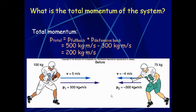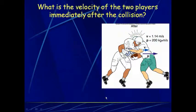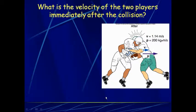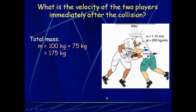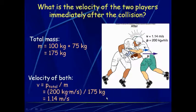The next question asks for the velocity of the two players immediately after the collision. Since they move as one, you use the equation M1·V1 initial plus M2·V2 initial equals (M1 plus M2) times V final. We already found the total momentum is 200 kilogram meters per second, so you add up the masses M1 plus M2 and solve for the final velocity.